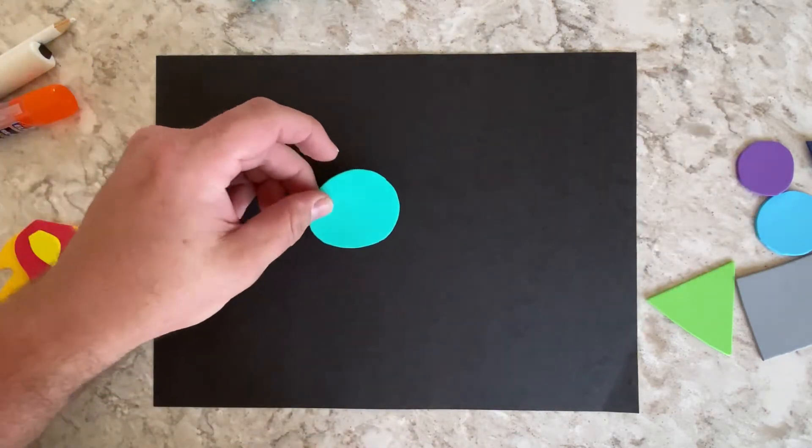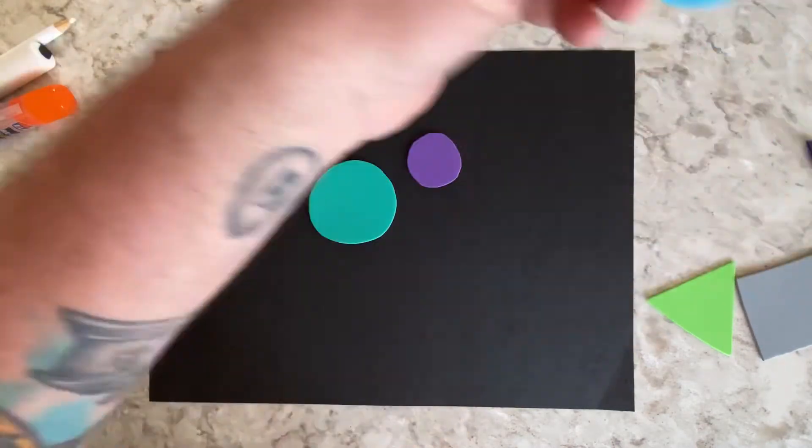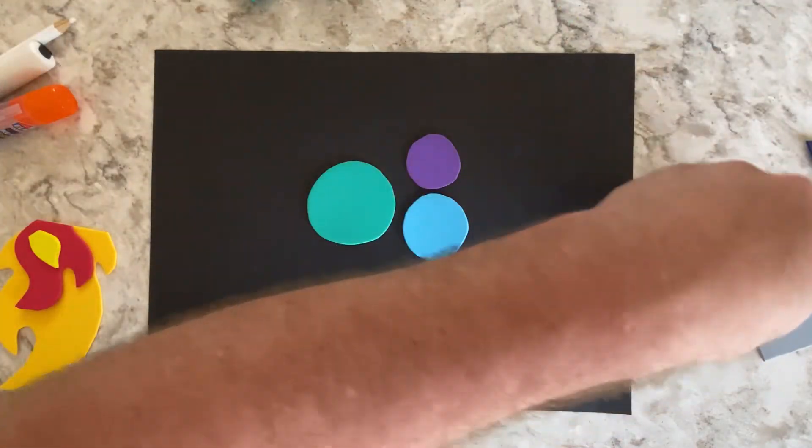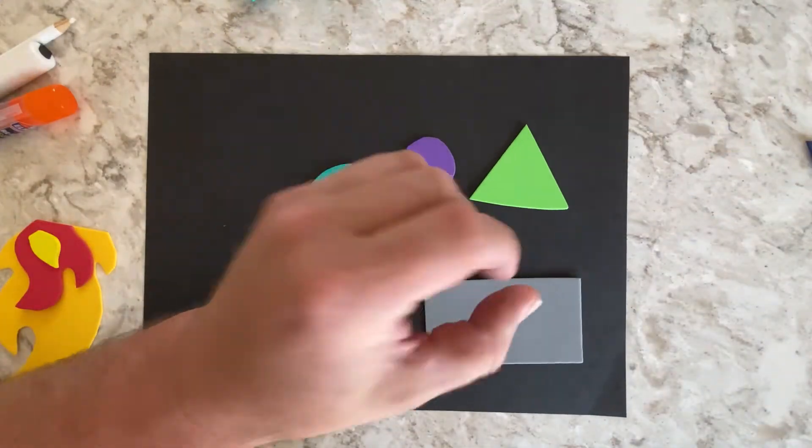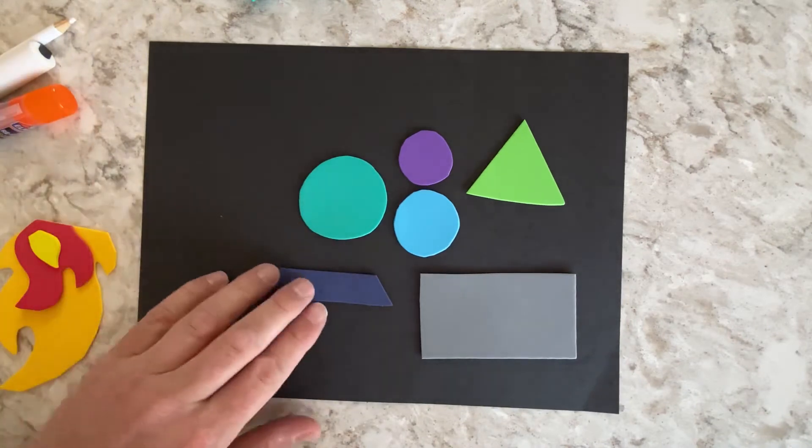There are what we call geometric shapes. Geometric shapes are shapes that are defined so they have a name for them like a circle or a triangle or a rectangle or even a trapezoid.